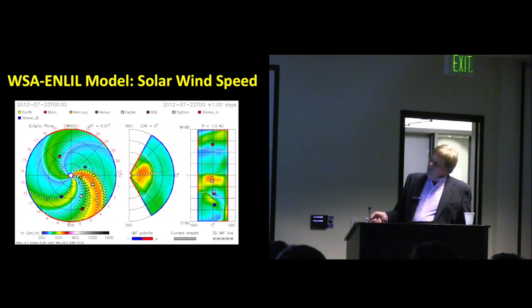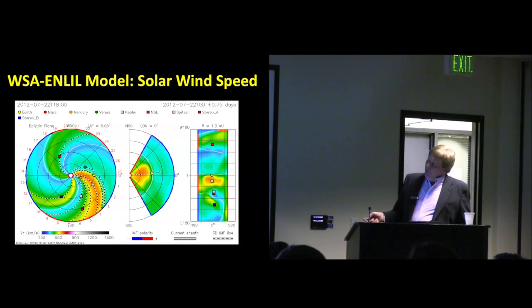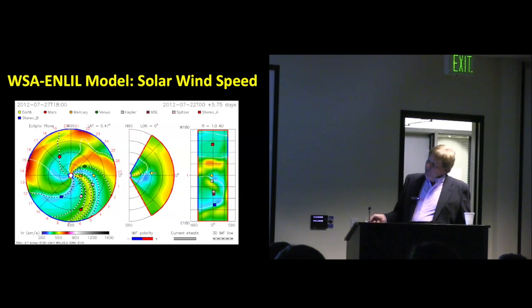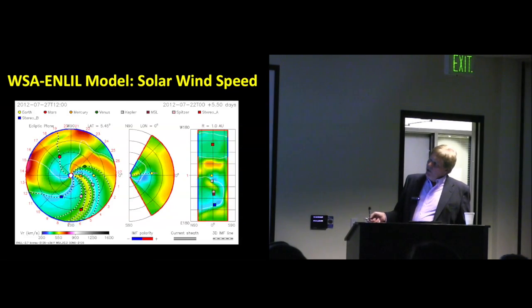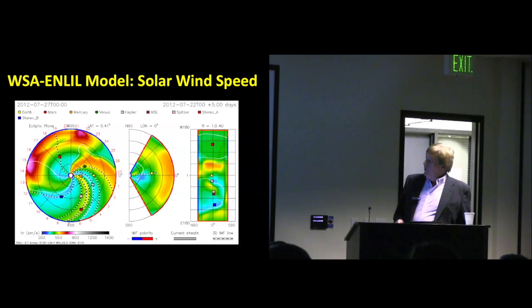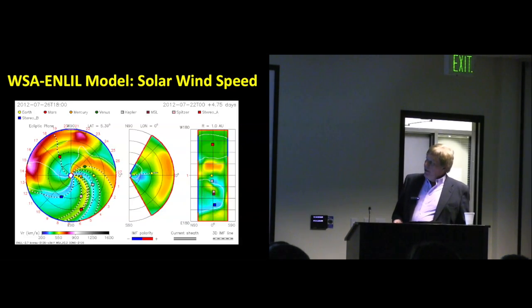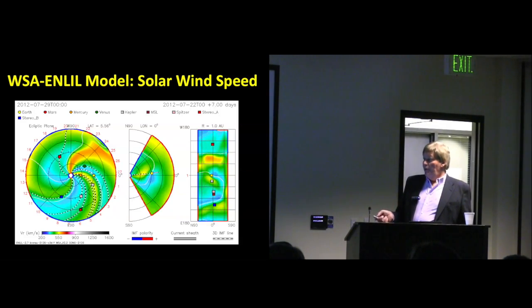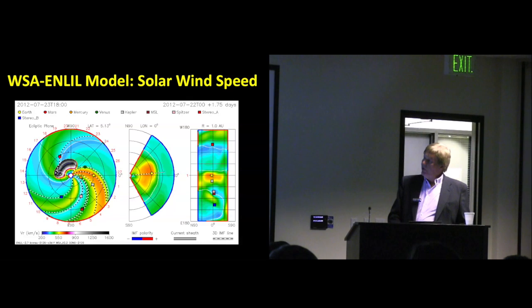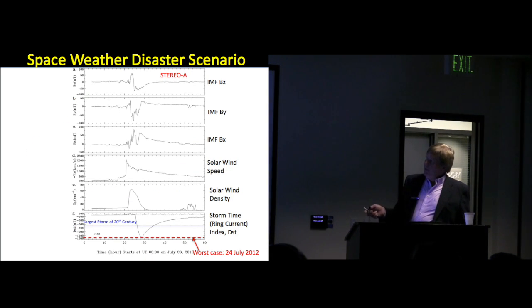Working with the Wang-Sheeley-Arge-Enlil model, another big item here with NOAA for space weather forecasting. The Stereo A spacecraft on the 23rd was at this location. The Earth is here. All the other assets we care about—Mercury, Venus, most other NASA spacecraft—were safely in the other quadrant. Only Stereo was out there in the line of sight. It was perfectly targeted at Stereo A. This lets us to do a thought experiment: What if the Earth had been at this location? Or what if this had occurred a week earlier?